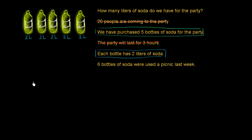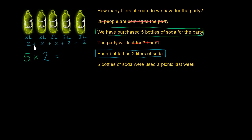So if we wanted to figure out the total number of liters of soda that we have, we have five bottles, and each of them are two liters each. So we have five times two. And what is that equal to? Well, five times two is the same thing as two plus two plus two plus two plus two — you have five twos added together. So this is going to be equal to two plus two plus two plus two plus two.